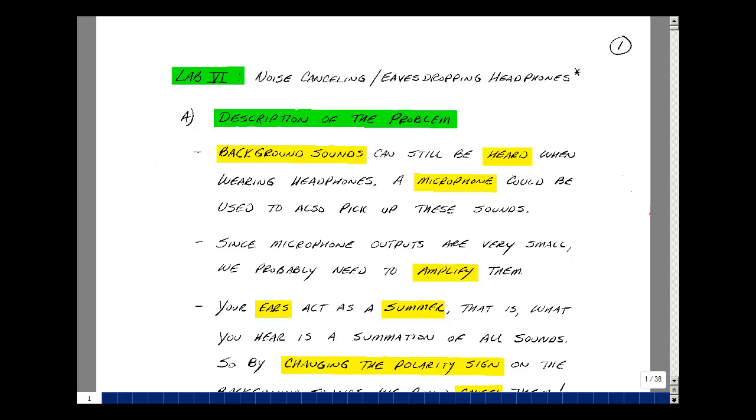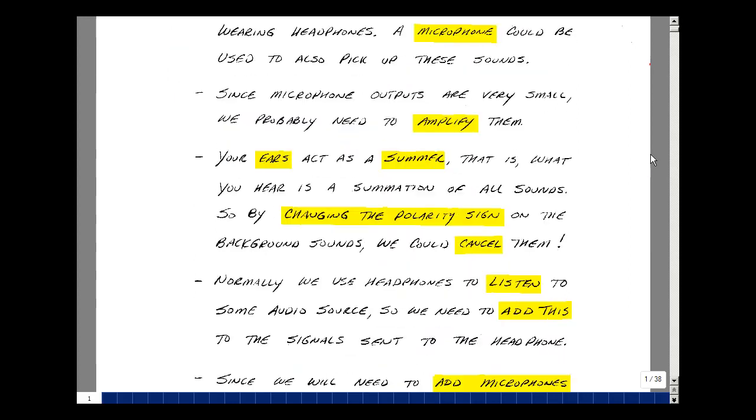Background sounds can still be heard when wearing headphones. If we place a microphone in the headphone, we could pick up these background sounds. Microphone outputs are very small voltages, so you'll probably need to amplify this signal. Your ear acts as a summing circuit, hearing the summation of all sounds presented to it. So if we took this background noise, changed the sign of it, and added it to your headphone,